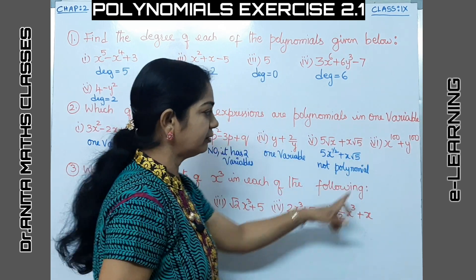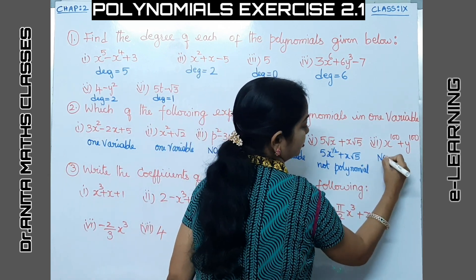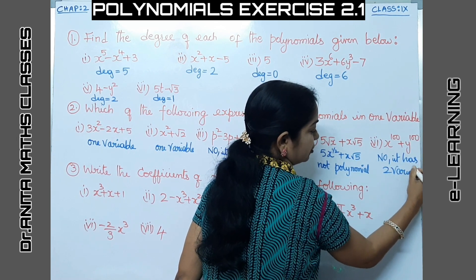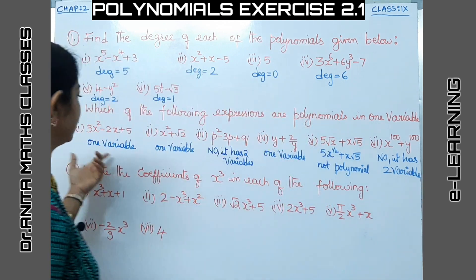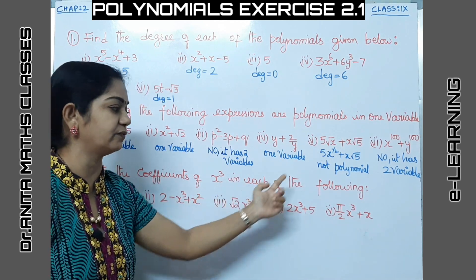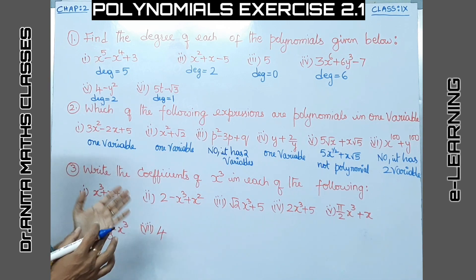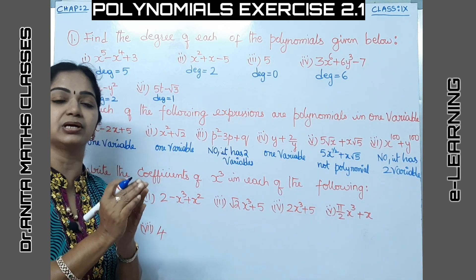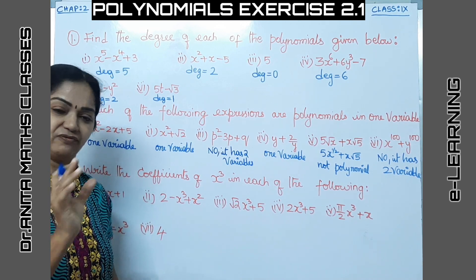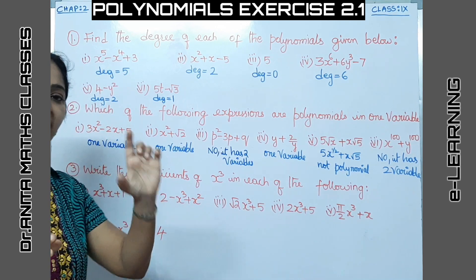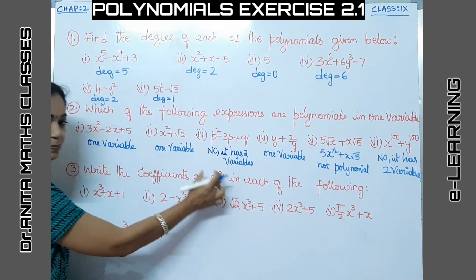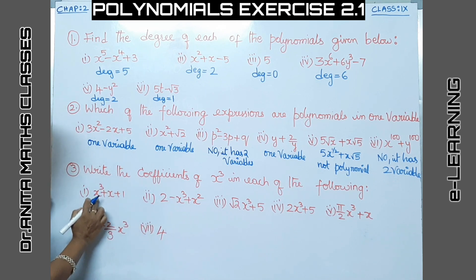Another expression has two variables clearly, so it is not a one-variable polynomial. Now let's do the third problem: write the coefficients of x³ in each of the following. The coefficient is the number attached — meaning multiplied — to the variable. A number that is added or subtracted is not called a coefficient; only the number multiplied to the variable is the coefficient.